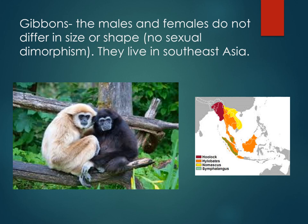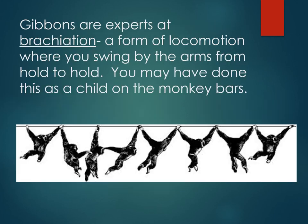Gibbons do not have much size difference between males and females, or they have no sexual dimorphism, though they do have different coloring. They live throughout Southeast Asia. Gibbons are experts at brachiation, a form of locomotion where you swing by the arms from hold to hold — similar to what you may have done as a child on the monkey bars.